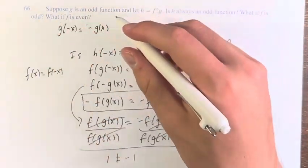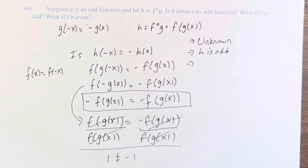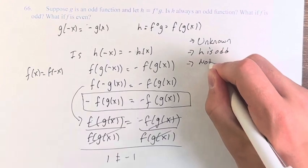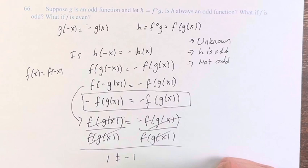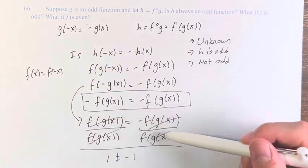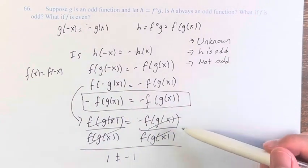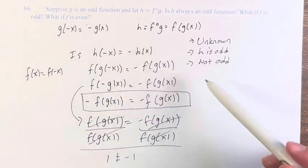Therefore, if f is even, then we know that it is not odd. Unless f of g of x is equal to 0, in which case 0 is equal to negative 1 times 0. But in general, it is not odd.